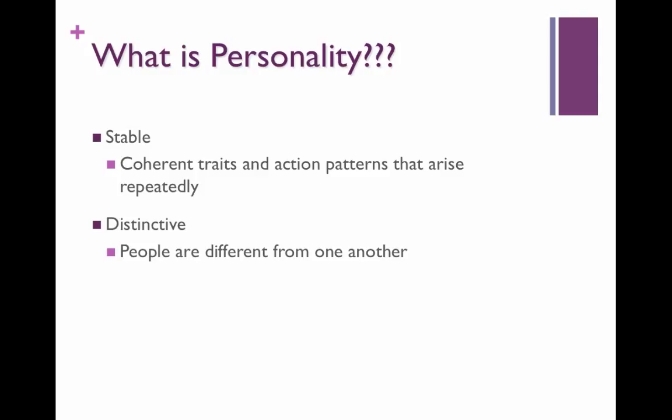Personality at a definitional level includes two main features. It is stable, meaning that the traits and patterns that people demonstrate through their personality arise repeatedly. This is largely true from about age three. Some personality traits can be seen even sooner. We can certainly learn new skills and have things that inhibit our personality, but in general, our personality is stable.